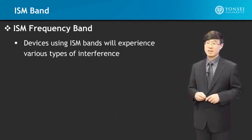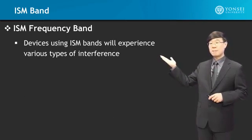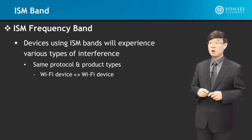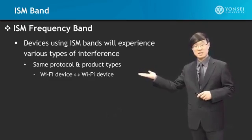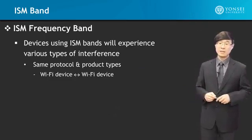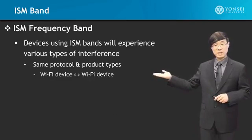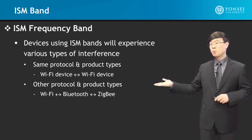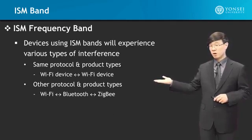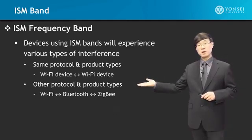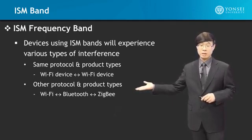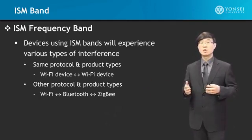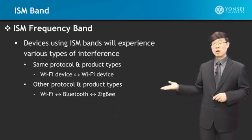Devices using the ISM band will experience various types of interference. The same protocol and product types will interfere with each other — Wi-Fi devices will interfere with other Wi-Fi devices and need to share channel resources effectively. Other protocols and product types will also interfere with each other: in the 2.4 GHz range, Wi-Fi devices will interfere with Bluetooth devices, and these will interfere with Zigbee devices — in some cases making communication impossible. You need to consider interference due to other protocols and other active networks sharing the same frequency band.